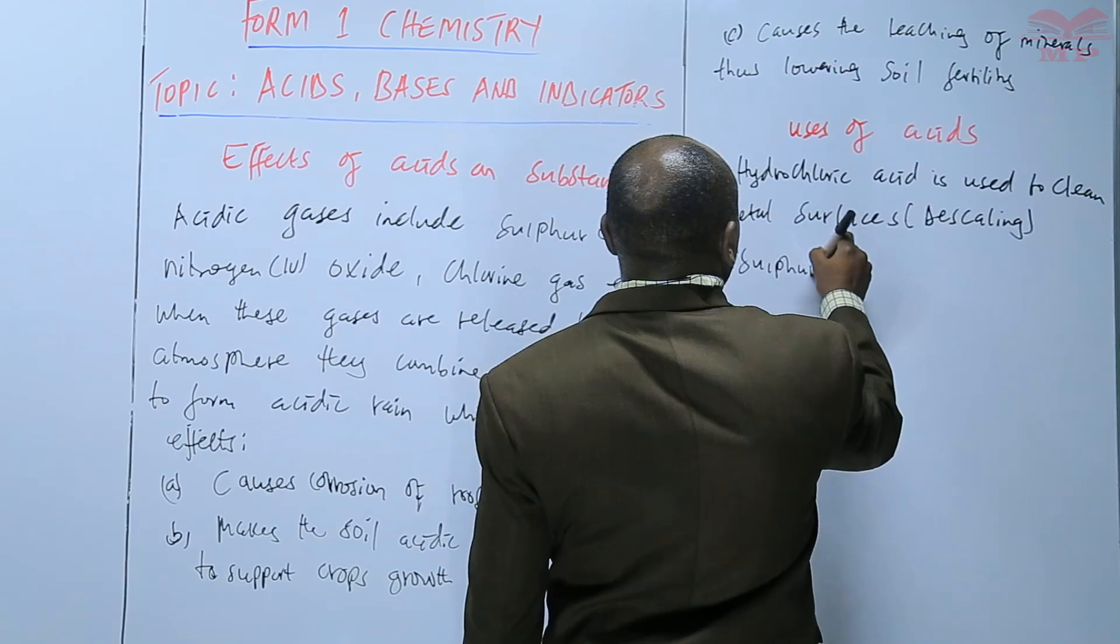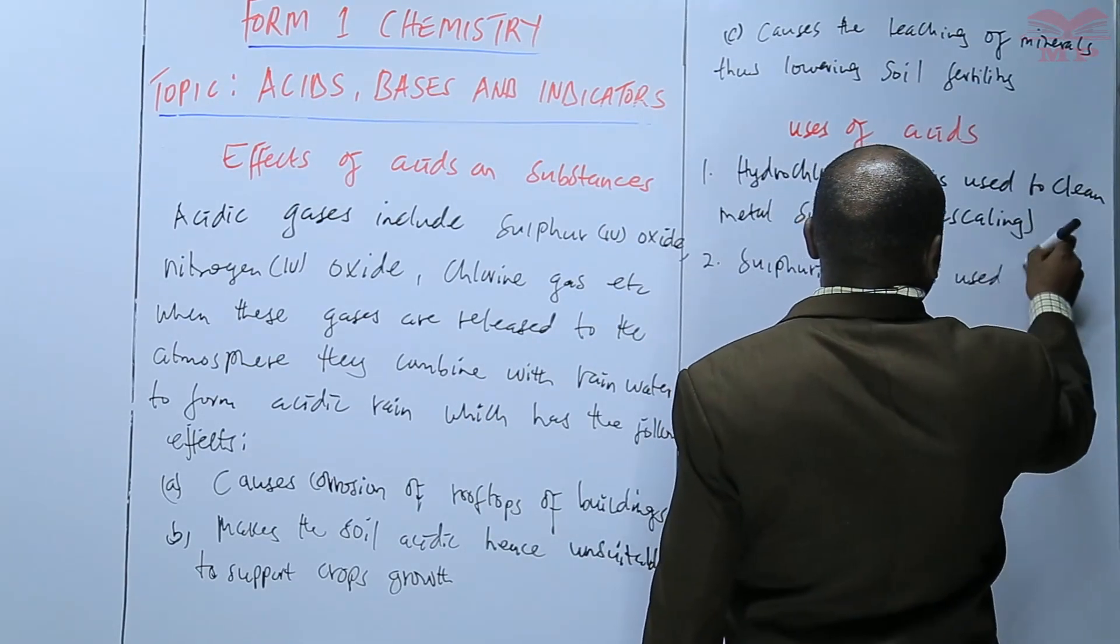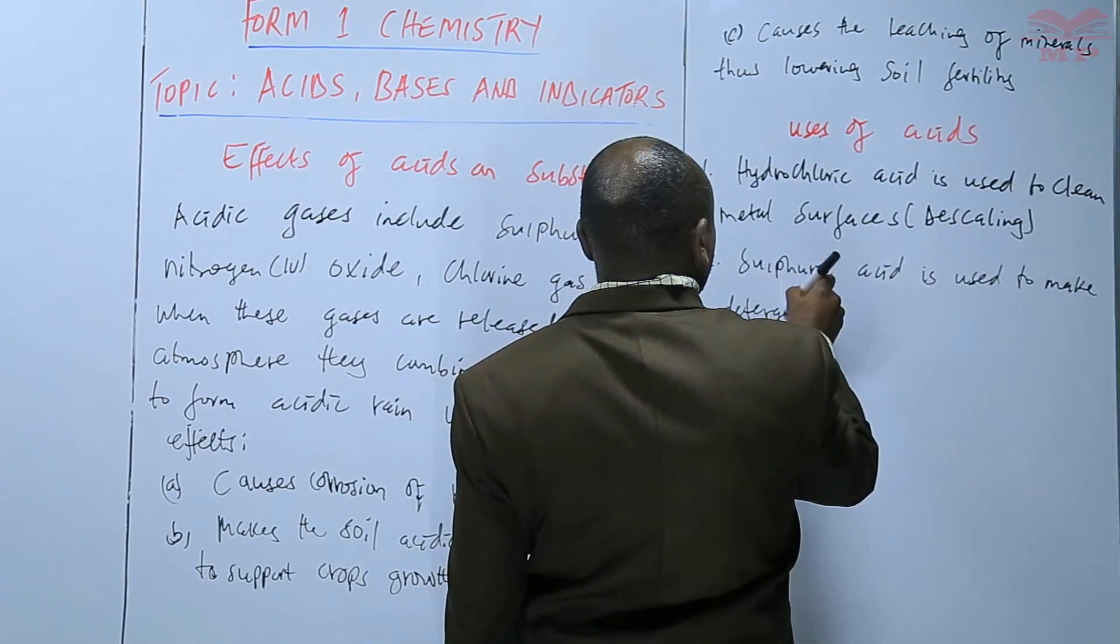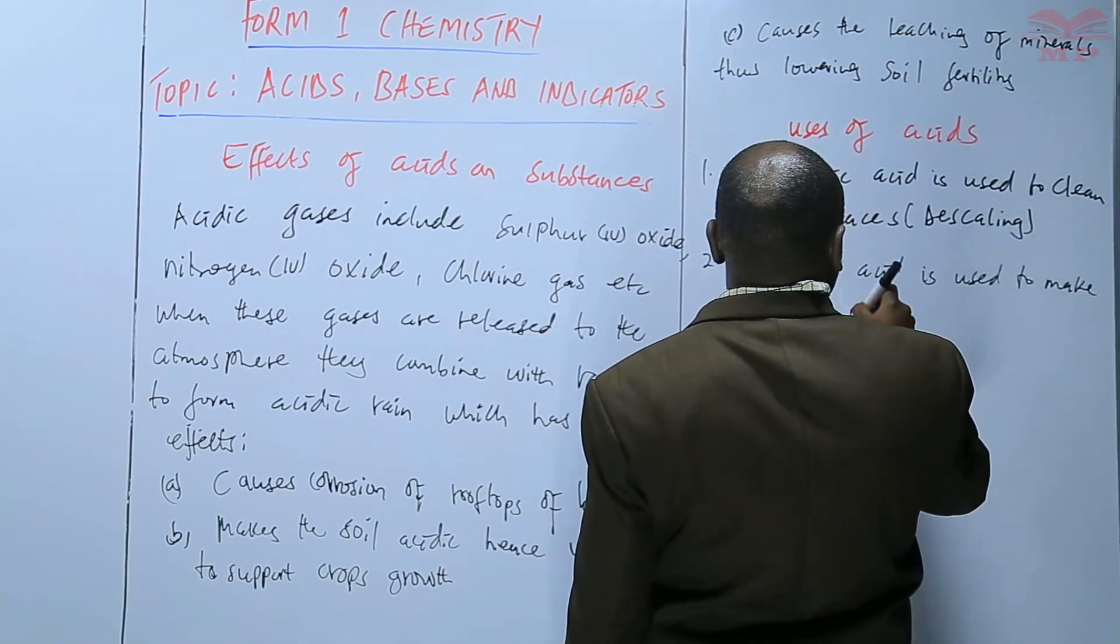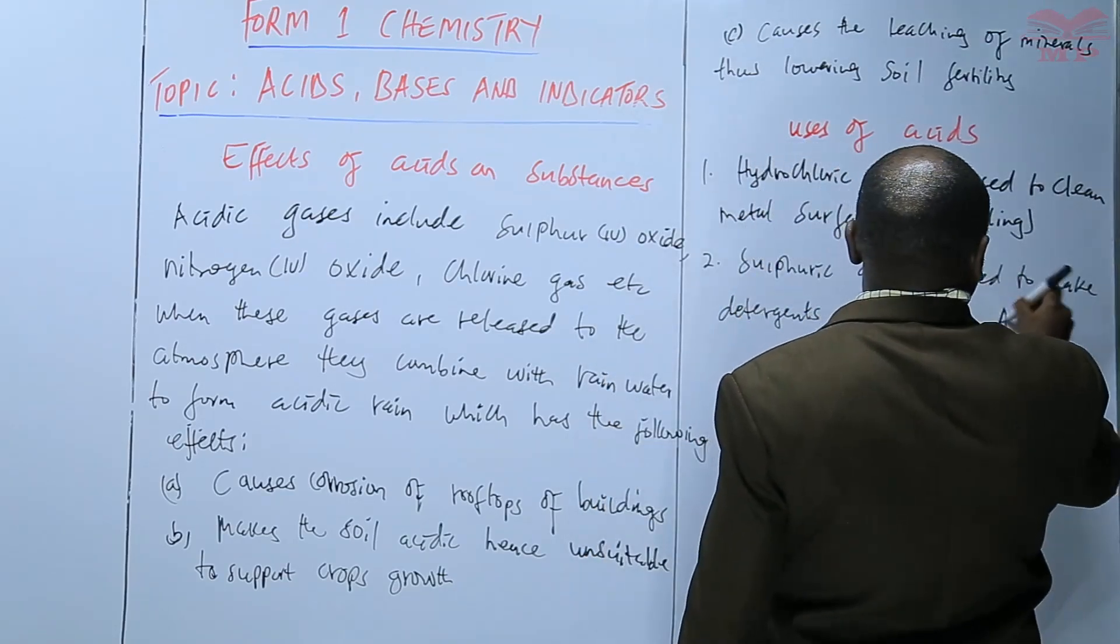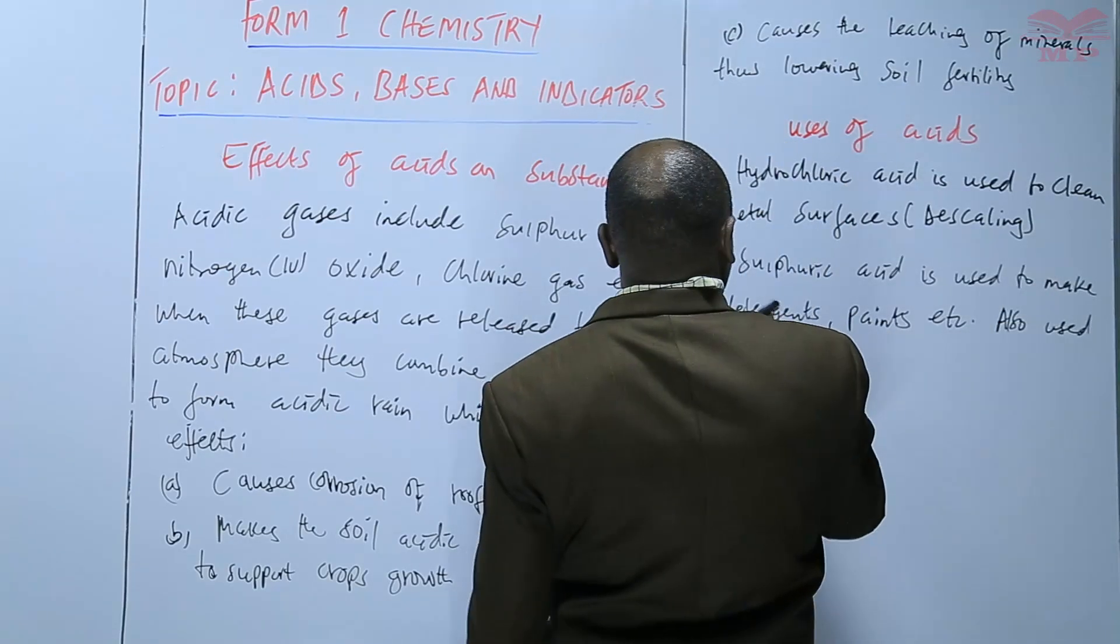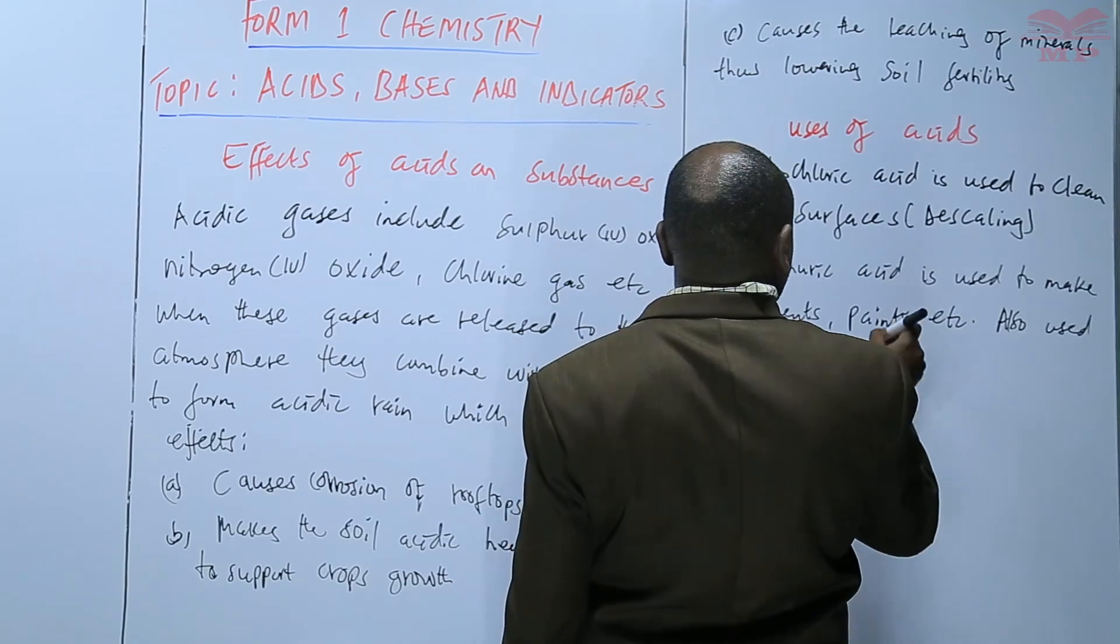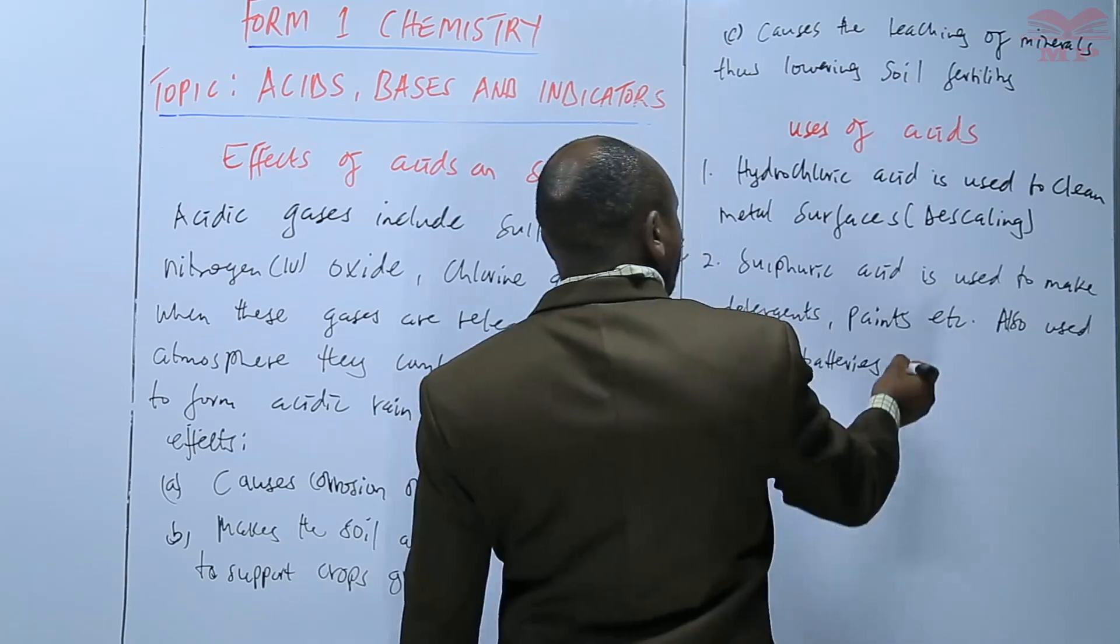We have sulfuric acid. It is used to make detergents. Sulfuric acid is also used in car batteries. The acid that is found in car batteries is usually sulfuric acid.